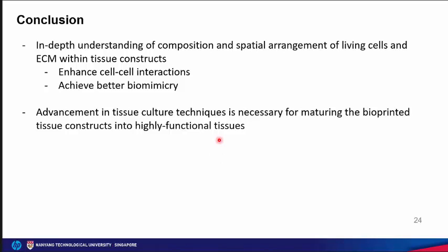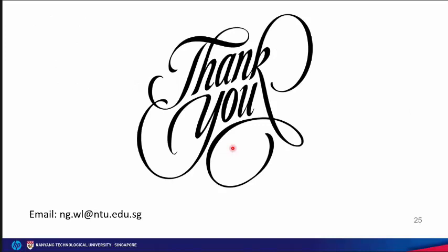In conclusion, to create functional tissue constructs, it is important to have an in-depth understanding of the composition and spatial arrangement of different living cells and ECM proteins within the tissue constructs. This enhances cell-cell interaction and achieves better biomimicry. Advancement in post-processing steps such as tissue culture techniques is also necessary for maturing biological tissue constructs into highly functional tissues.